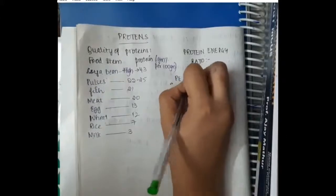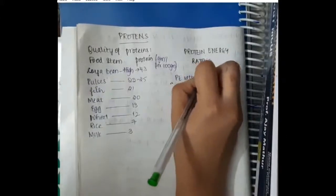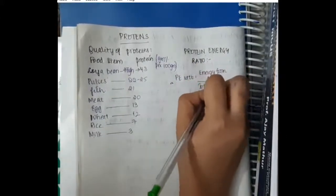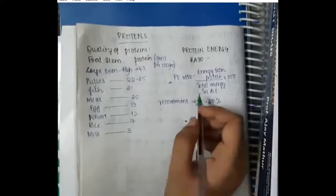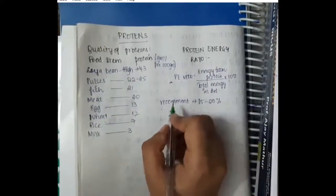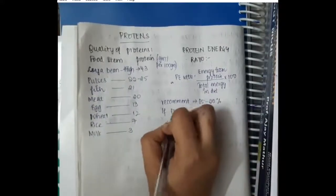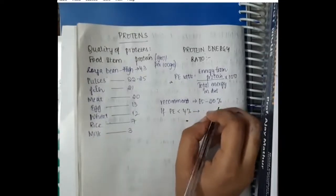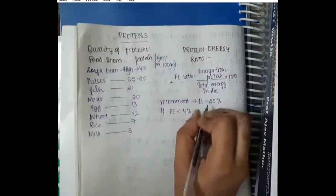What is important here is protein energy ratio. Protein energy ratio is the energy from protein divided by total energy in the diet, multiplied by 100. The recommended protein energy ratio is 15 to 20 percent. If the protein energy ratio is less than 4 percent, then it is not sufficient.